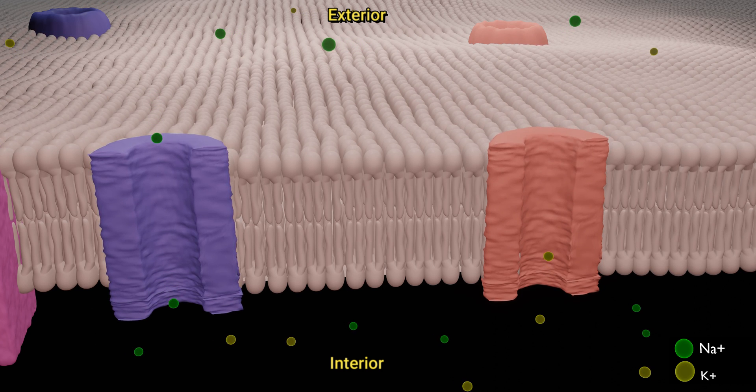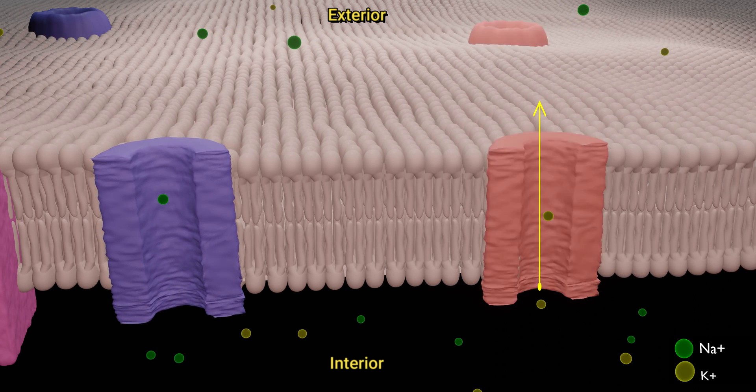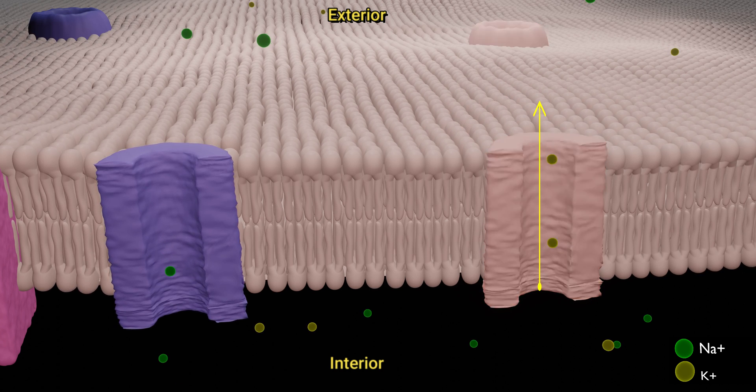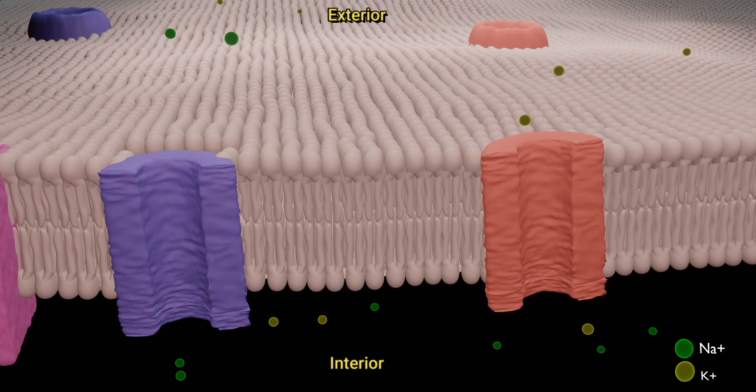K+ channels allow the flow out of K+ ions. These ions diffuse according to the concentration gradient.